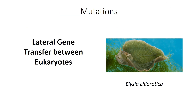Another example of lateral gene transfer involves a sea slug called Elysia chlorotica. This sea slug eats algae, and instead of fully digesting it, it incorporates the algal chloroplasts into its own tissues. Over evolutionary time, it has acquired some of the genes required to maintain those chloroplasts inside its tissues — effectively becoming a photosynthetic animal. Photosynthesis alone won't produce enough energy for this animal to be totally active, but it can definitely help during lean times.